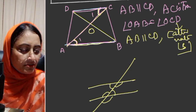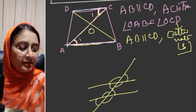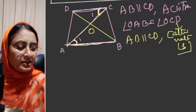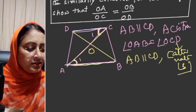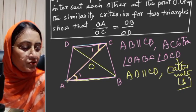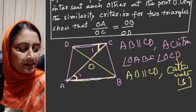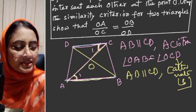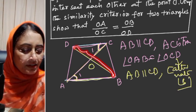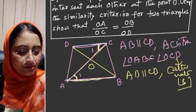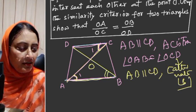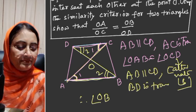Again this angle is equal to this angle. AB is parallel to CD. The transversal is BD. Therefore this angle is equal to this angle. Therefore angle OBA is equal to angle ODC.